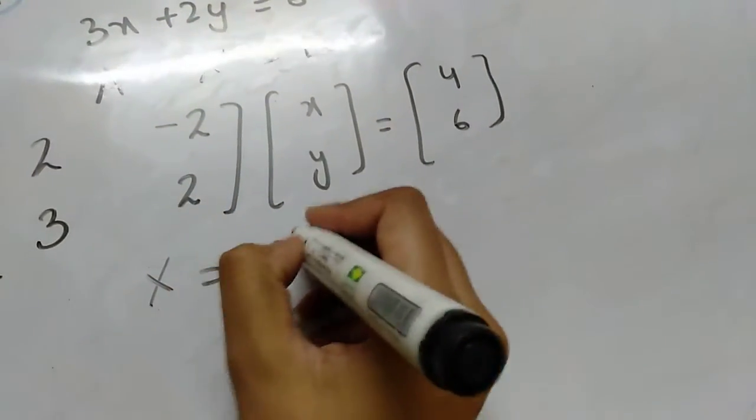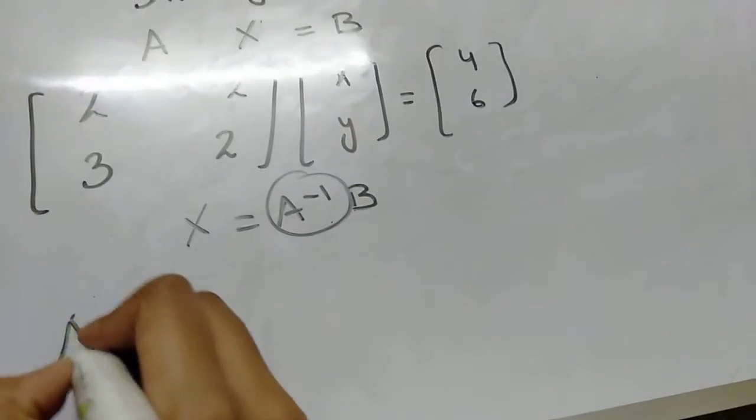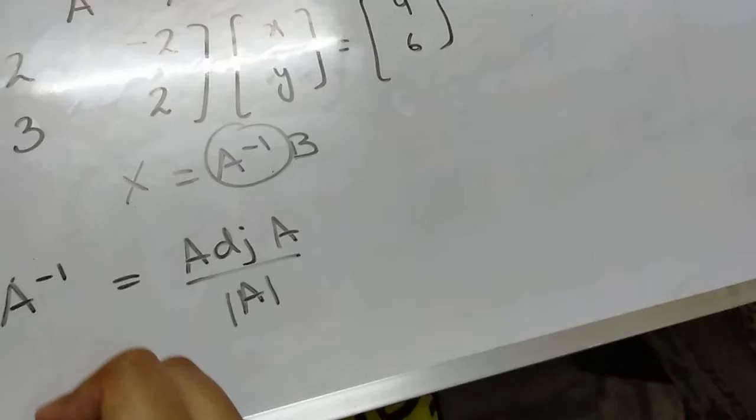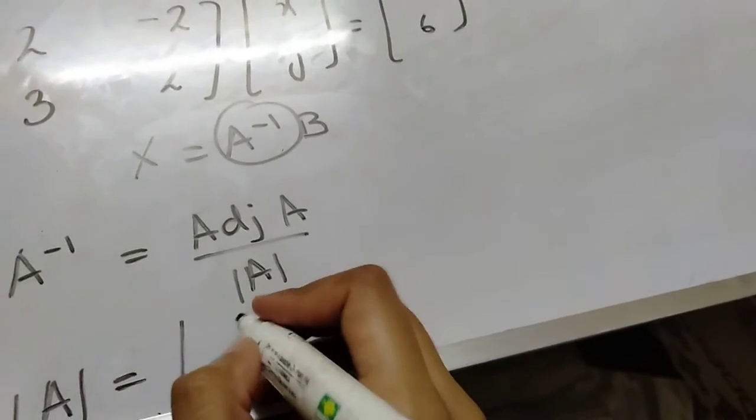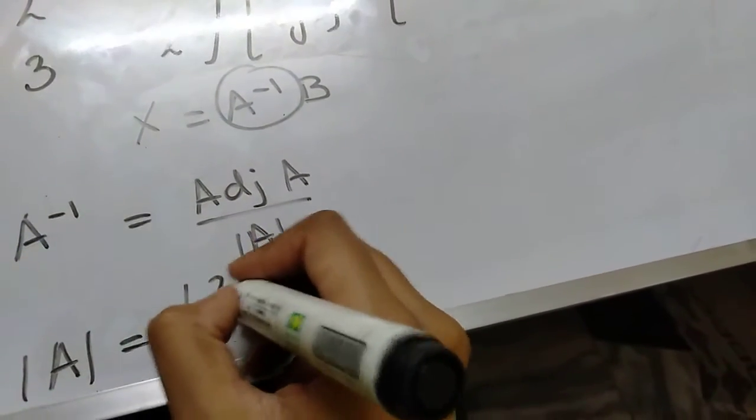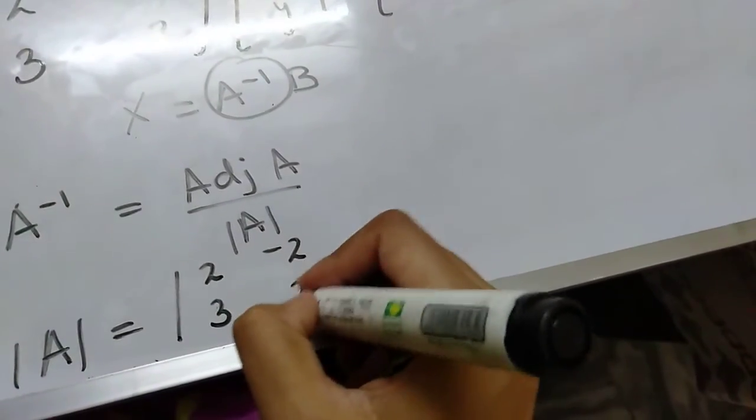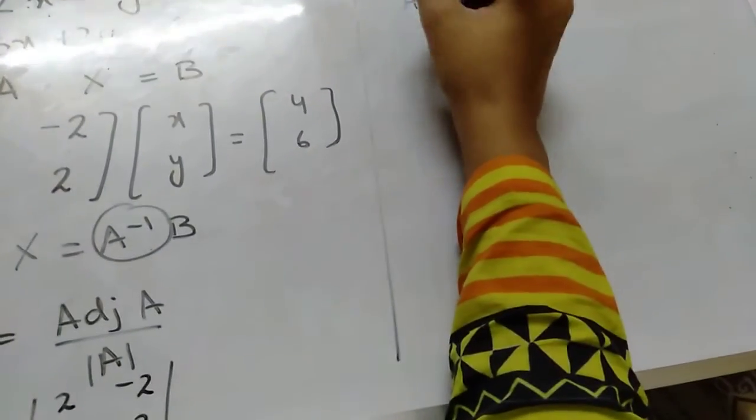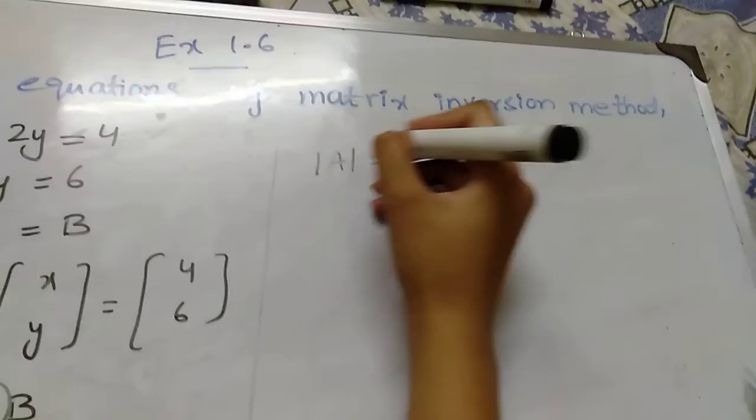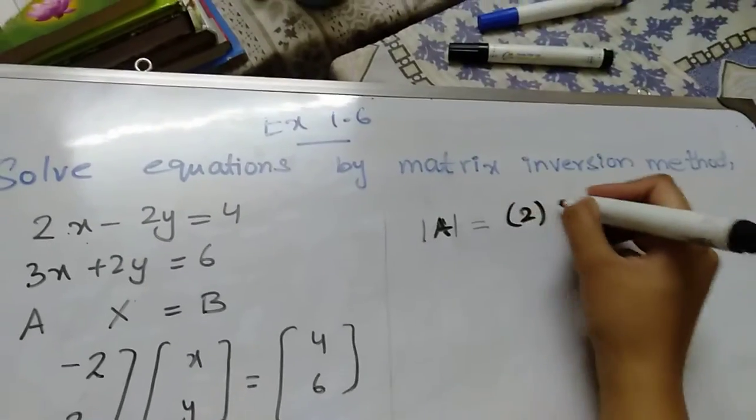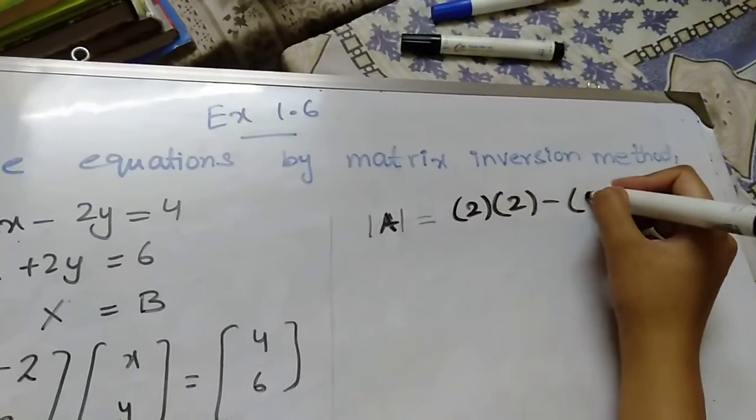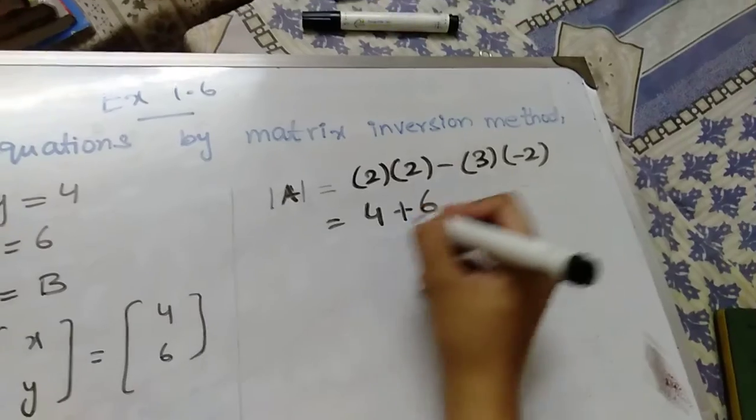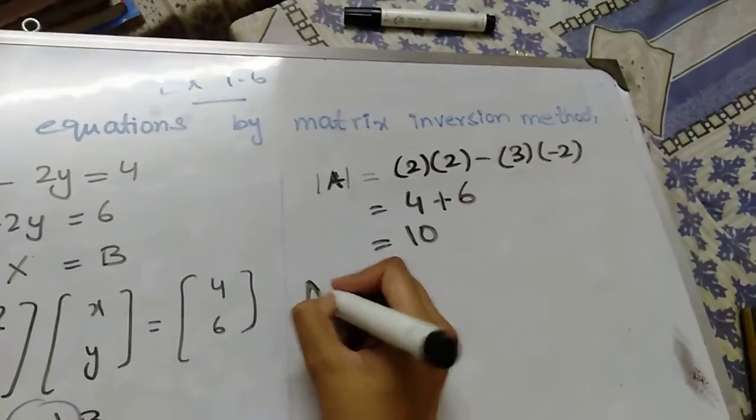Now we have to find X, so it will be A inverse B. First we have to find A inverse. To find A inverse, we should find adjoint of A divided by determinant of A. So first of all, we will find the determinant of A. The determinant is 2 into 2 minus 3 into minus 2. So 2 times 2 is 4, minus times minus is plus, 3 times 2 is 6, so it's 10.